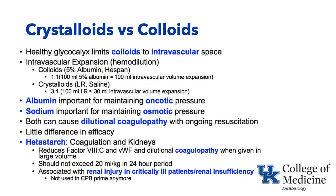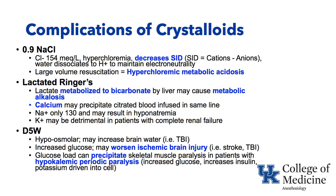Complications of crystalloids: 0.9% normal saline has chloride of 154 mEq/L — very hyperchloremic. The strong ion difference is cations minus anions. Giving a lot of chloride narrows the strong ion difference. To maintain electrical neutrality, water dissociates to a hydrogen ion, resulting in hyperchloremic metabolic acidosis. Large volume resuscitation with normal saline can result in that classic hyperchloremic metabolic acidosis.